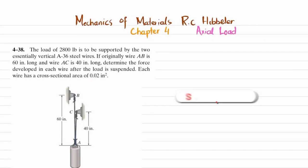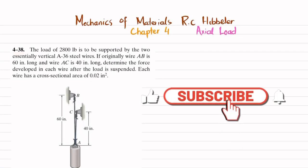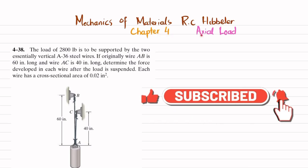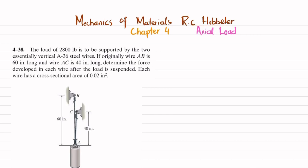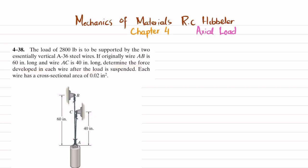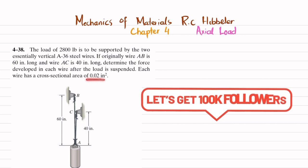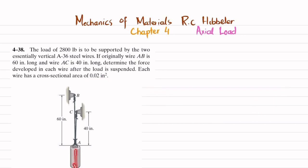Welcome back. In this video we are going to solve problem 4-38, taken from chapter 4 on axial load from the book Mechanics of Materials by R.C. Hibbeler. The problem states: a load of 2800 pounds is to be supported by two essentially vertical A36 steel wires. Wire AB is originally 60 inches long, wire AC is 40 inches long. Each wire has a cross-sectional area of 0.02 square inches.